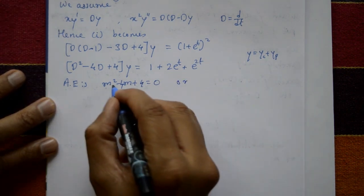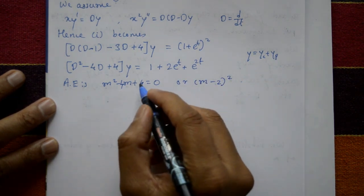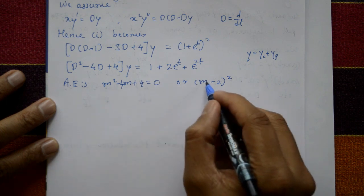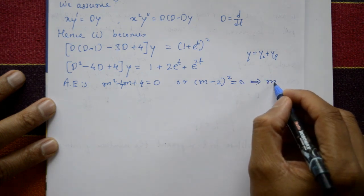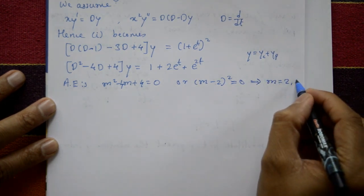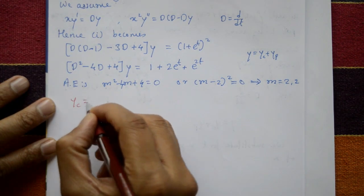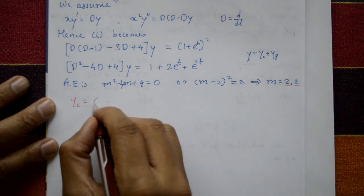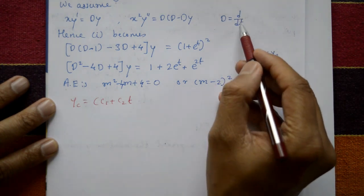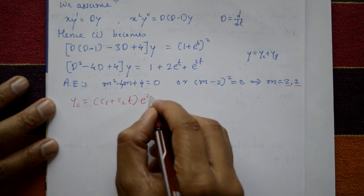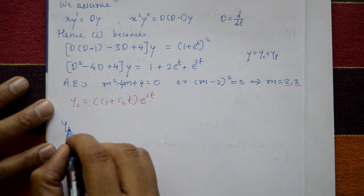The auxiliary equation is m² minus 4m plus 4 equals 0. This factors as (m−2)² equals 0, using the (a−b)² identity. The roots are m equals 2 and 2, which are repeated. So the complementary function is yc equals (c₁ plus c₂t) e^(2t).